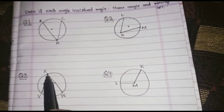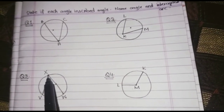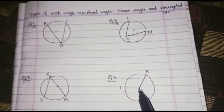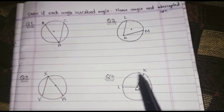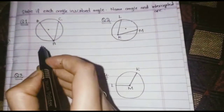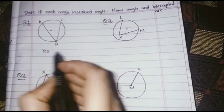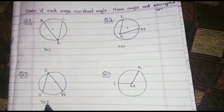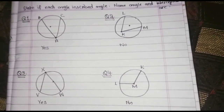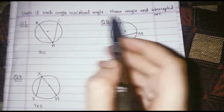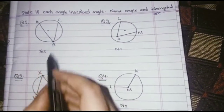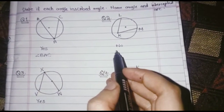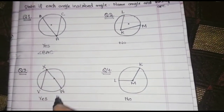Here we have a vertex at the circle, and here we have a vertex that is not at the circle point. So this one is an inscribed angle, this one is not, this one is also an inscribed angle, and this one is not. He is also asking to name the angle: the angle is BAC. We will not write the angle for the non-inscribed ones. The angle for the inscribed one is VXW.